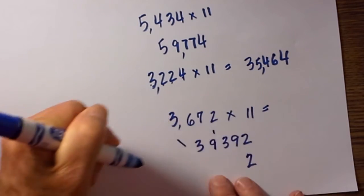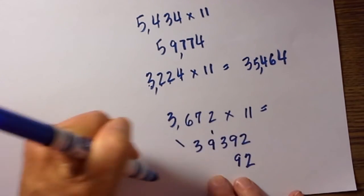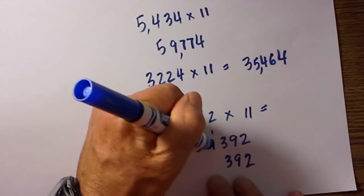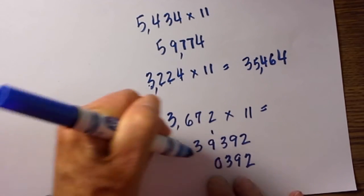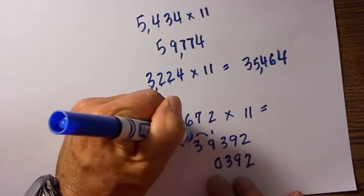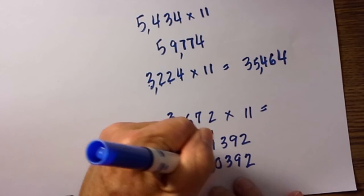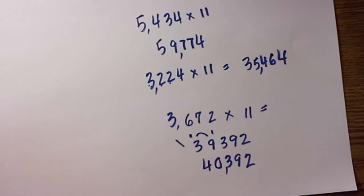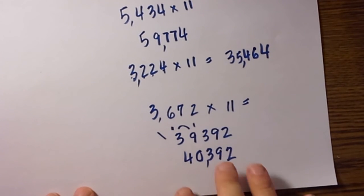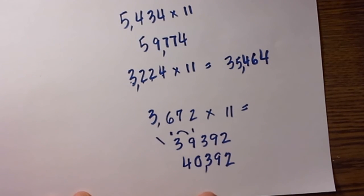So now let's bring down your final answer. 2, 9, 3, 9 plus 1 is 10. We can't write a 10 so we carry the 1 to the left. So 40,392. Even with an example like this, you still see that it is very quick.